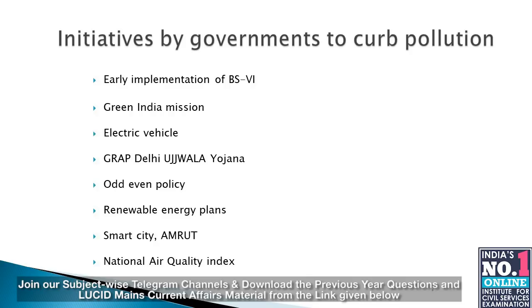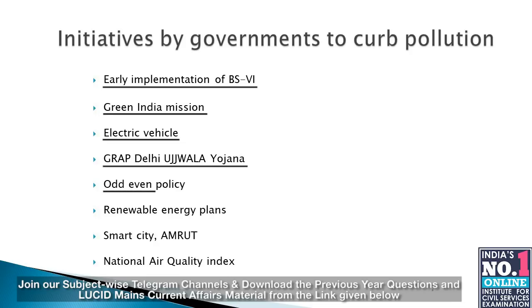Government initiatives to curb pollution include: early implementation of BS-6, Green India Mission, Electric Vehicles, GRAP in Delhi, ban on diesel vehicles and crackers, Ujwala Yojana, odd-even policy, Smart City, and AMRUT. The National Air Quality Index measures and monitors 8 pollutants: PM10, PM2.5, NO₂, SO₂, CO, O₃, NH₃, and Pb.